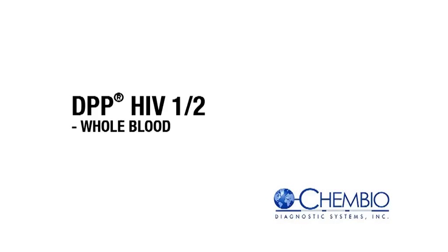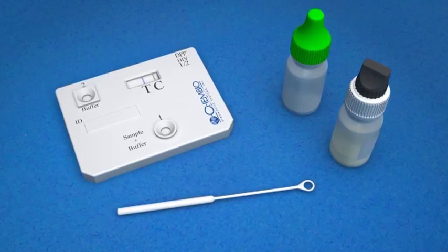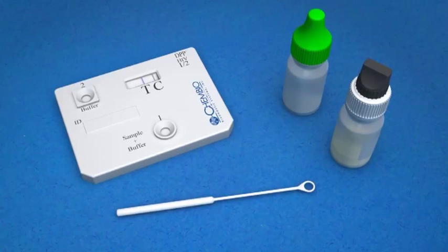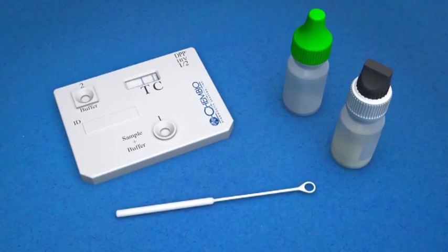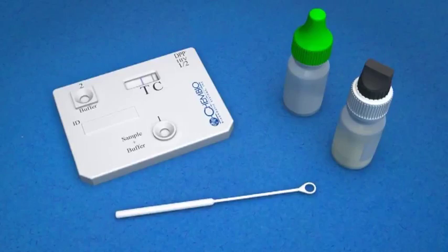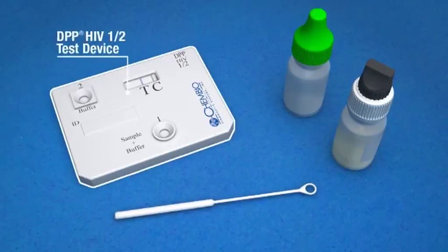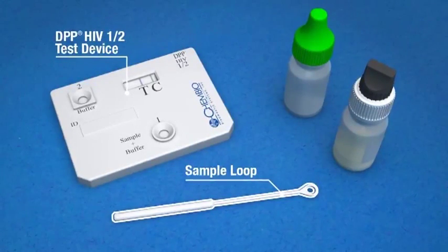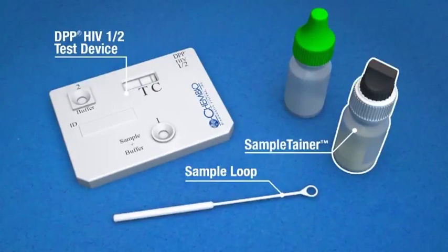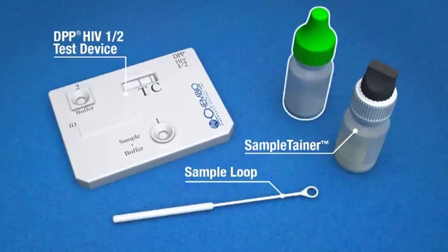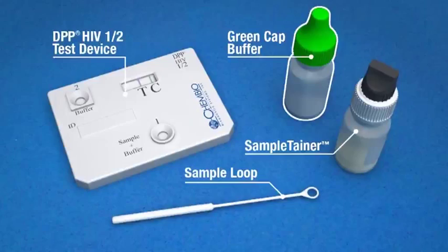DPP-HIV-1 and 2 instructions for whole blood dilution method. The assay for whole blood contains the following components: the DPP test device, the whole blood sample loop, a black cap sample tainer for diluting specimens, and a green cap running buffer bottle.